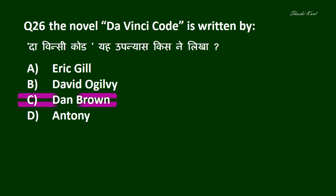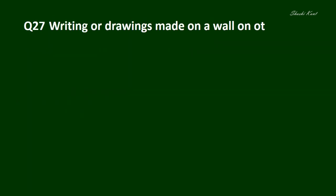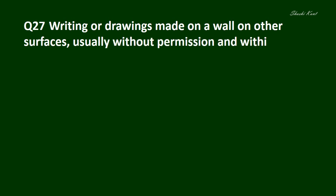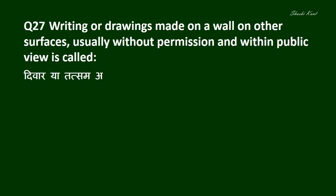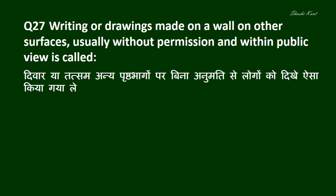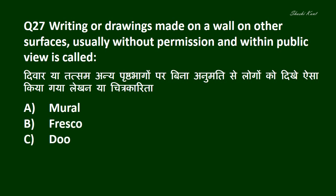Question No. 27: Writings or drawings made on a wall or any other surfaces, usually without permission and within public view, is called — दीवार या तत्सम अन्य पृष्ठ भागों पर बिना अनुमति के, लोगों को दिखे, ऐसा किया गया लेखन या चित्रकारिता। Options: A. Mural, B. Fresco, C. Doodling, D. Graffiti. और इसका सही जवाब है D. Graffiti.